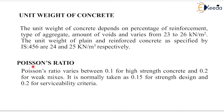Poisson's ratio is the next property. Poisson's ratio varies between 0.1 for high-strength concrete and 0.2 for weak mixes. It is normally taken as 0.15 for strength design and 0.2 for serviceability criteria. That is all about the properties of concrete.